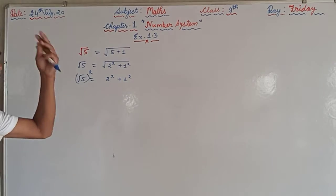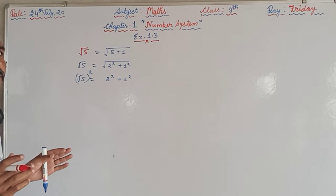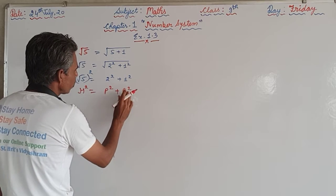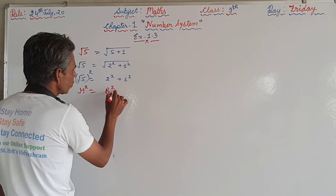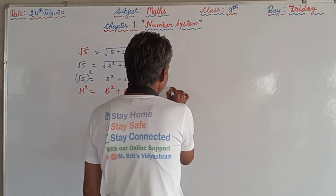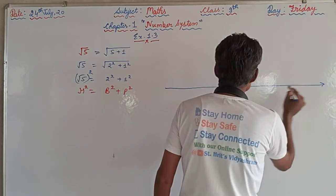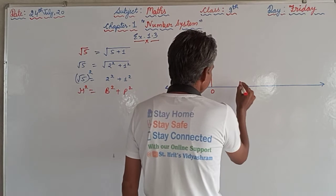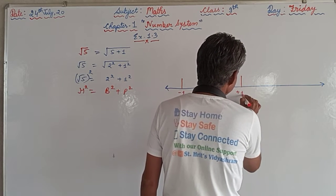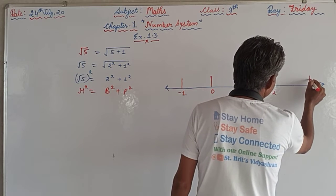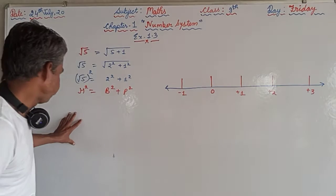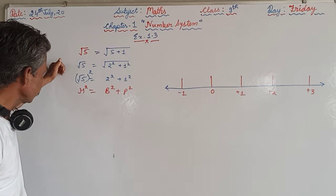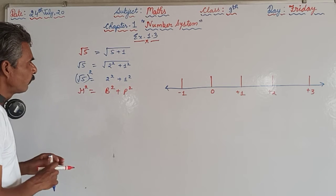From here we are writing in our mind that this resembles with one of the terms, that is h squared equals to b squared plus p squared, or here we can interchange the places also: b squared plus p squared. So if we draw the number line, number line is like that. Suppose here it is 0, minus 1, plus 1, plus 2, and this is plus 3.